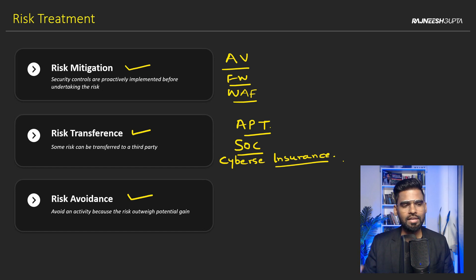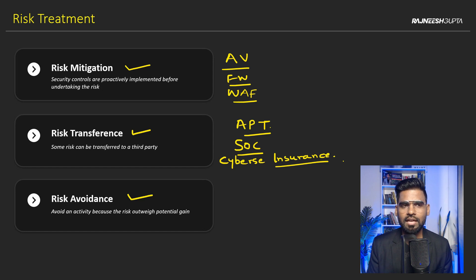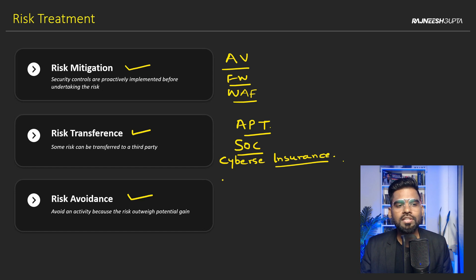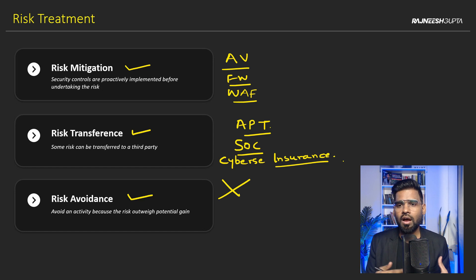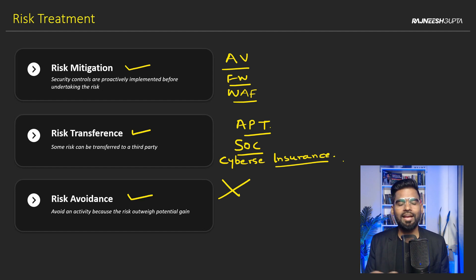Next we have risk avoidance, which can sometimes be confusing. Risk avoidance is a decision the organization makes because the risk outweighs the potential gain. Organizations know they can't eliminate all risk, so they select the right avoidance strategy to help prevent some of the losses associated with certain risks.